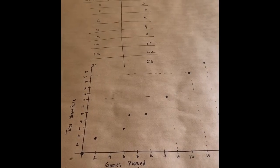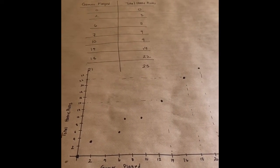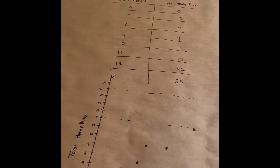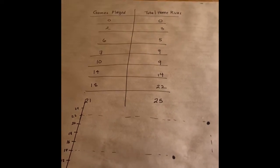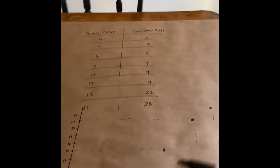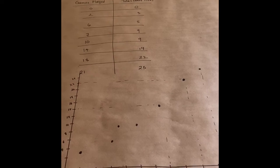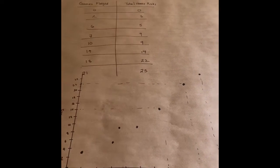So I have made my scatter plot. My scatter plot has one, two, three, four, five, six, seven, eight points because there are eight rows in my table of values. And that is what a scatter plot is.